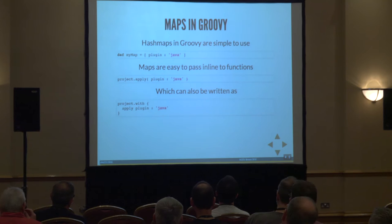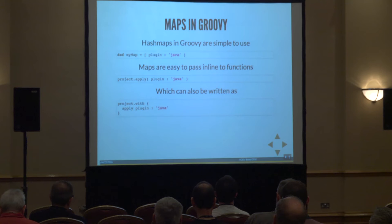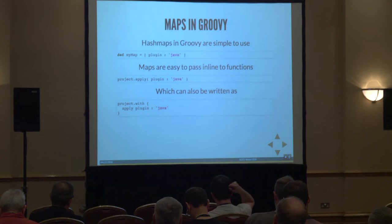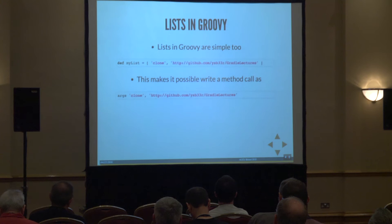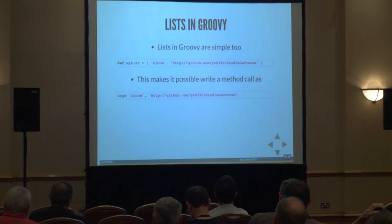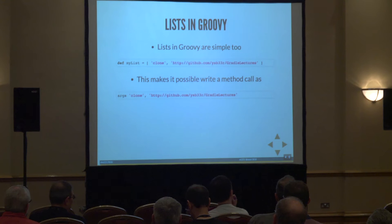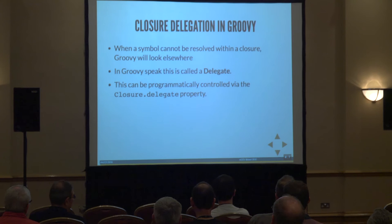With maps in Groovy, you don't have to define big classes. Just put square brackets with key-value pairs separated by colons. When you call methods that take a map as a parameter, you don't have to put the square brackets in — you just write it directly and can drop the parentheses completely. For example, the apply function on a project class takes a map as a parameter, so you just say 'apply plugin: java'. Similarly with lists — no colon needed, just square brackets with items separated by commas. You can pass a list to a method with no parentheses at all.